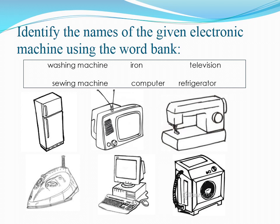Now identify the names of the given electronic machines using the word bank. The six names are: Washing Machine, Iron, Television, Sewing Machine, Computer, and Refrigerator. The first picture — what is the name of the machine? It's a Refrigerator. Very good!